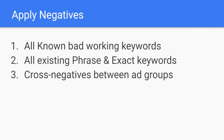Then you have to apply negatives. You need to apply all known bad keywords that you've already found in your account. You also have to apply all existing phrase and exact keywords that you already have in your account. If you have keywords that already exist in other campaigns, you don't want DSA to compete for those keywords, because DSA is by default a less relevant option. So just download the report with all your keywords, put them in exact and phrase match, and exclude them from DSA. And don't forget to make cross-negatives between ad groups — you don't want several ad groups targeting the same pages on your site.